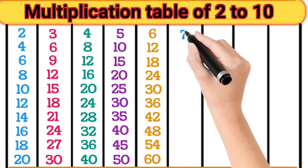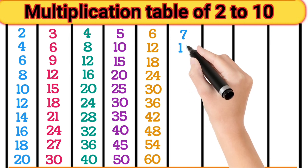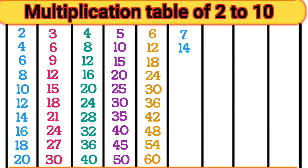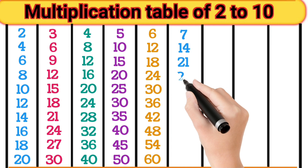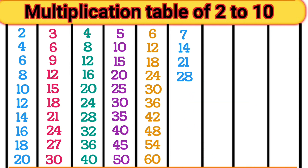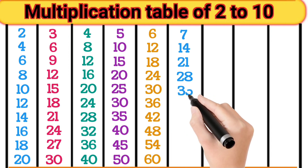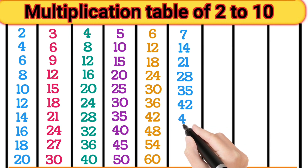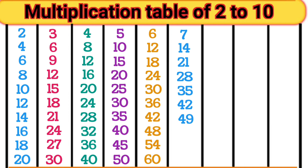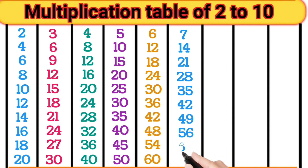7 1s are 7. 7 2s are 14. 7 3s are 21. 7 4s are 28. 7 5s are 35. 7 6s are 42. 7 7s are 49. 7 8s are 56. 7 9s are 63. 7 10s are 70.